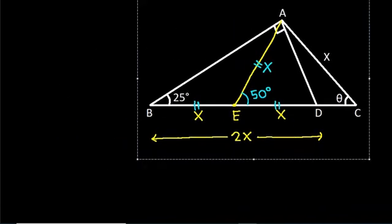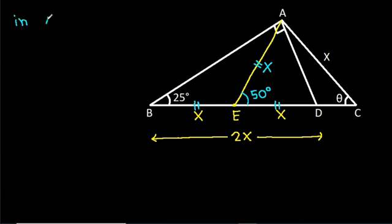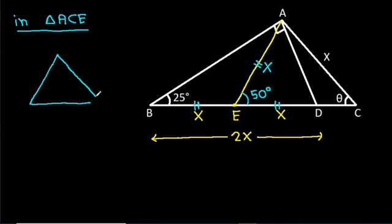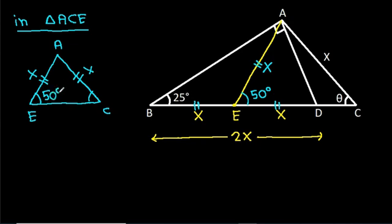Now, in triangle ACE, we have AC equal to AE, both equal to X. That means these two base angles will be equal. This angle is 50 degrees and this angle is theta. That means theta will be 50 degrees.